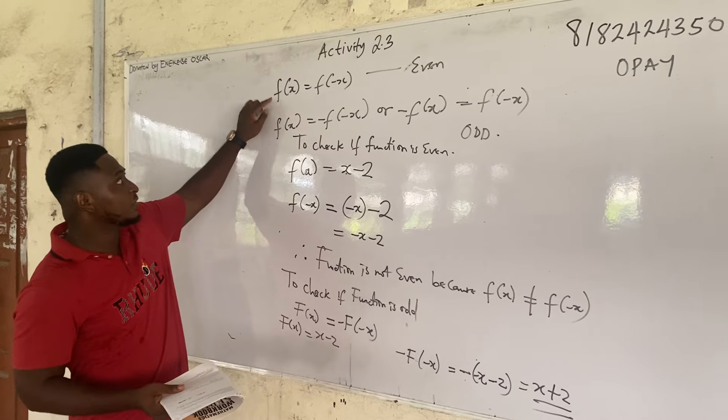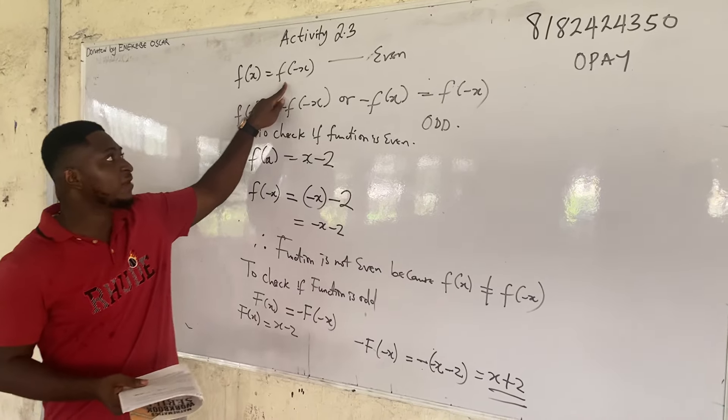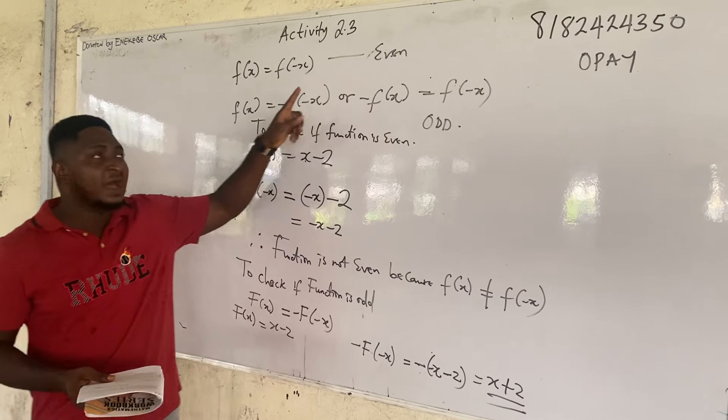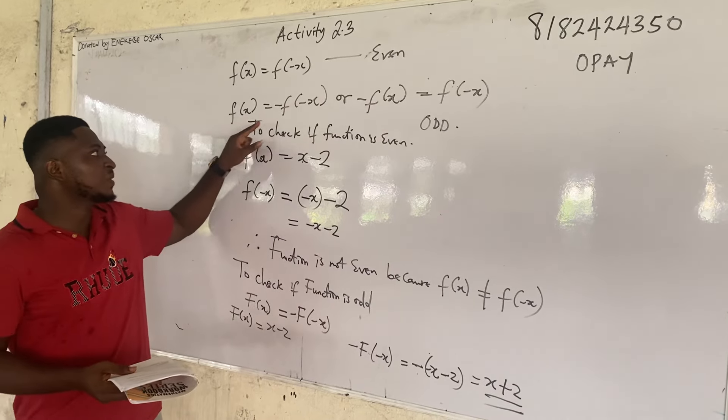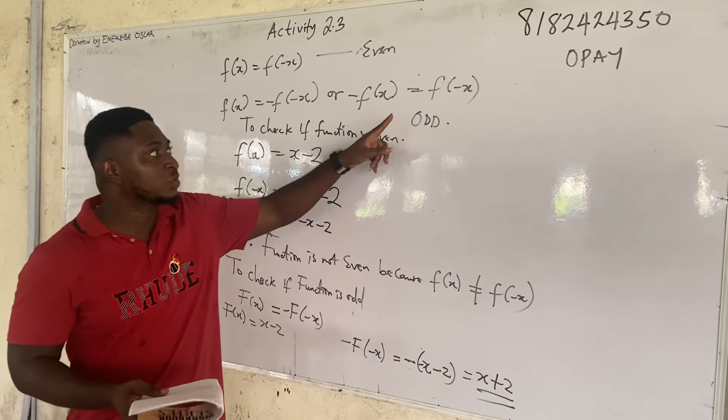So class, for a function to be even, this is the criteria. For a function to be even, f of x must be equal to f of minus x. And for a function to be odd, f of x must be equal to minus f of minus x, or minus f of x must be equal to f of minus x.